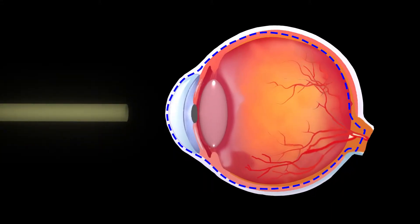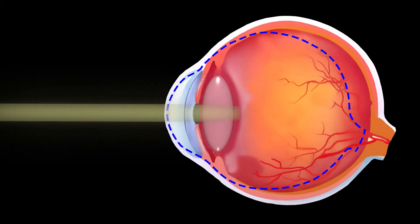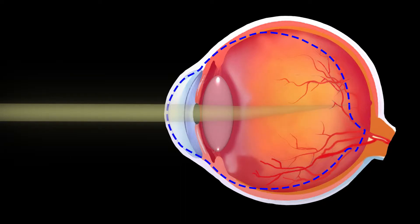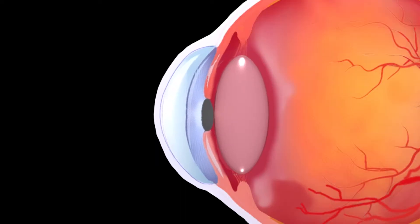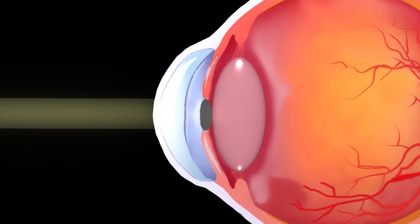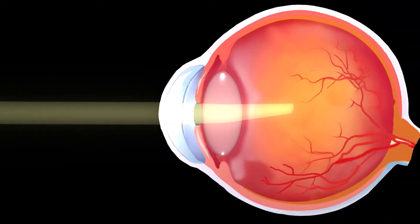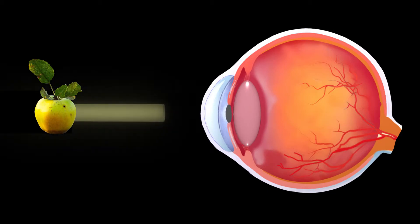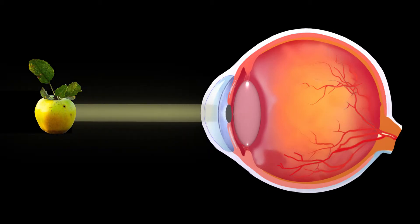Myopia occurs when the eyeball is larger and has a longer axial length than an average eyeball. It can also occur from the cornea and/or lens being too curved or strong for the length of the eyeball. Since the eye is longer and/or stronger than the average eyeball, the light that enters through the pupil will focus in front of the retina rather than directly on the retina.